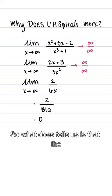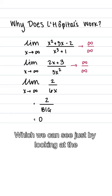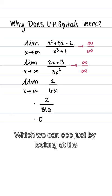So what this tells us is that the denominator grows more quickly than the numerator, which we can see just by looking at the rational function. x cubed grows faster than x squared. This is not an official proof, but more of a general understanding of why L'Hopital's works.